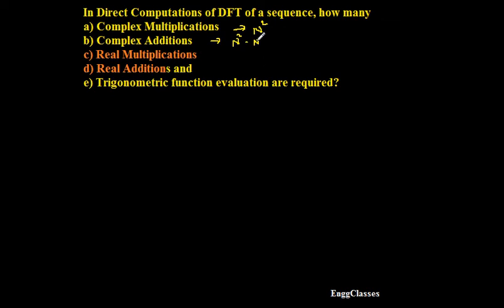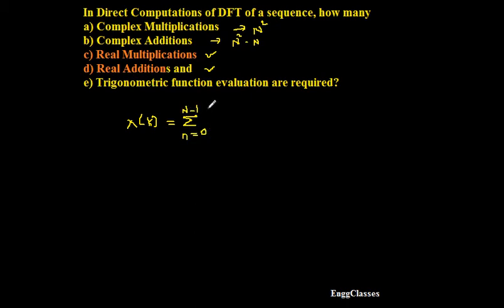So now the task is to consider real multiplications and real additions in this video. Before I proceed, let me consider the expression for X of k. X of k is nothing but the DFT of a sequence, which is equal to summation n equals 0 to N minus 1 of x[n] — that is the input sequence — multiplied by W_N to the power k times n. So this is the expression for DFT of any sequence.